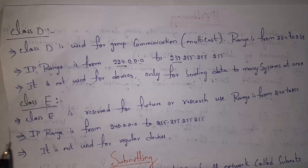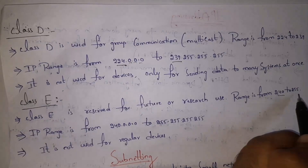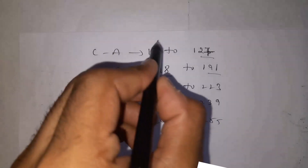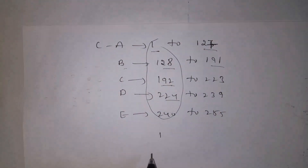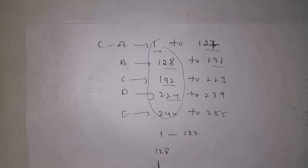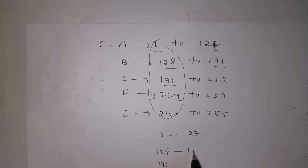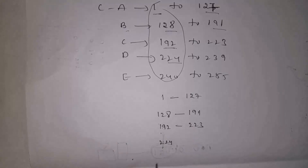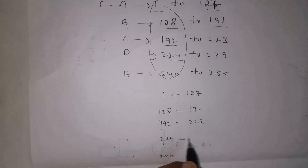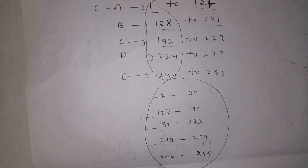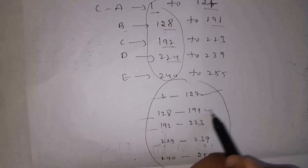The next one is Class E IP address. Normally no one uses Class E IP addresses. Class E IP address range is from 240 to 255. Regular devices do not use this IP address — it is reserved for future and research use. To summarize the ranges: Class A is 1–127, Class B is 128–191, Class C is 192–223, Class D is 224–239, and Class E is 240–255.